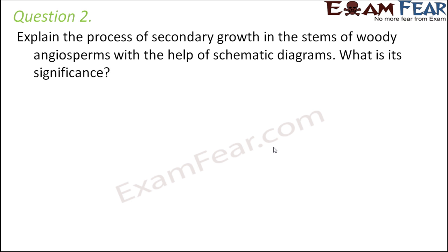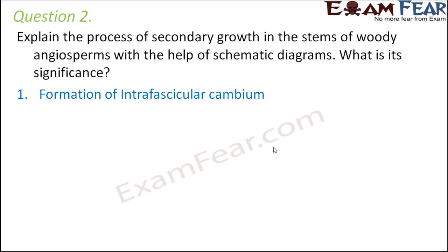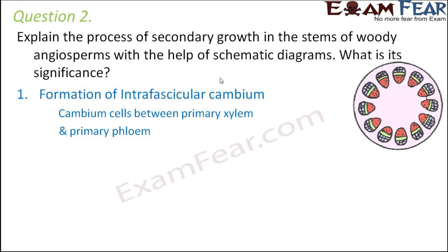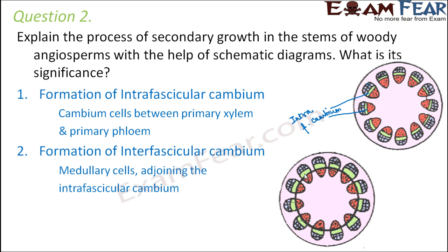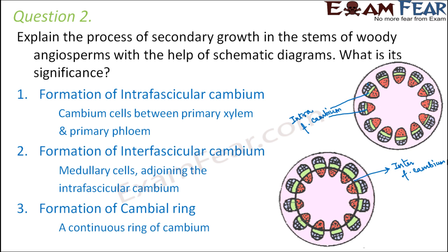The next question: explain the process of secondary growth in the stems of woody angiosperms with the help of schematic diagrams and its significance. The first step is the formation of intrafascicular cambium — the vascular cambium between the xylem and phloem. The next step is the formation of interfascicular cambium, where some cells join the intrafascicular cambium to form a ring-like structure.